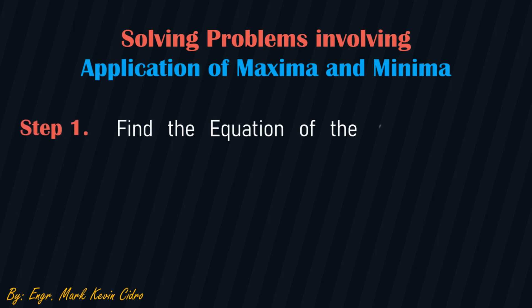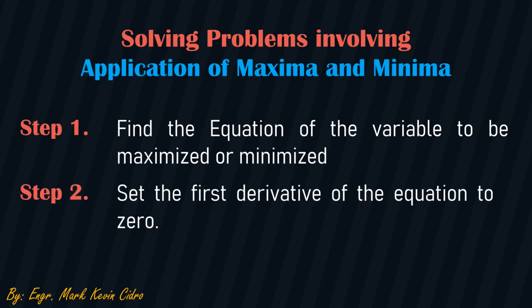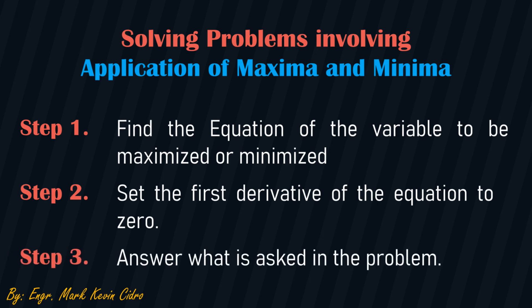Step number one: find the equation of the variable to be maximized or minimized. In solving these types of problems, it is very important to recognize what is being maximized or minimized and then find the equation involving that same variable. Step number two: set the first derivative of the equation to zero. Step number one is where you formulate the equation, and in step number two, this is where the actual differentiation happens — and remember, you have to set its value to zero. Step number three: answer what is asked in the problem.